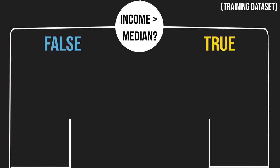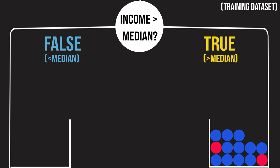Finally, let's see what happens when we split on income. Here, the true branch, which contains states with income above the median, has mostly blue states, and the false branch, or states with income below the median, has an almost equal number of red and blue states. This means that knowing that a state has below median income also does not meaningfully indicate political leaning.